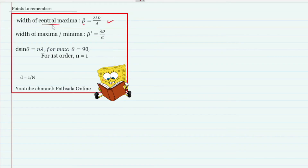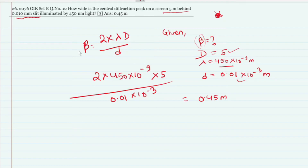To find the central maximum, we use this formula. The maximum and minimum conditions are both derived from the same formula. This is the question we solve. I will now go to the next question.